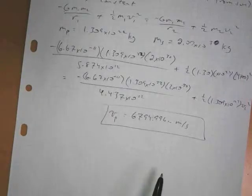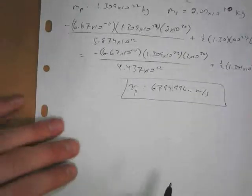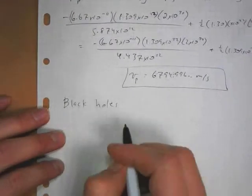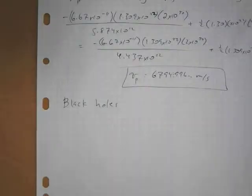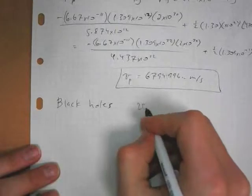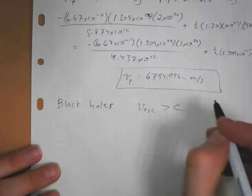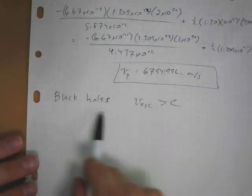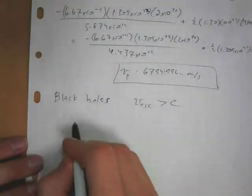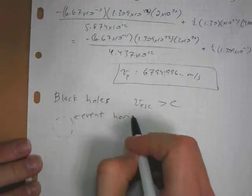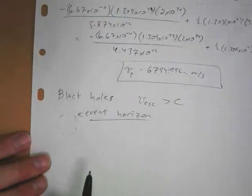But a couple little fun facts here. Black holes are collapsed stars, but the escape velocity is greater than the speed of light. And that's kind of what defines a black hole, is that nothing can get back out. There's a point in a black hole called the event horizon. And once something crosses the event horizon, then nothing can get back out.